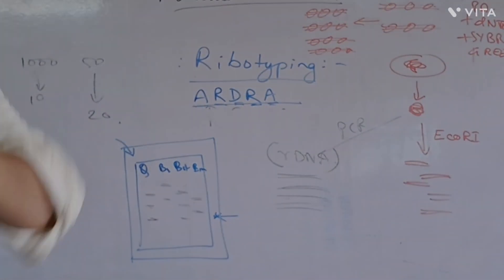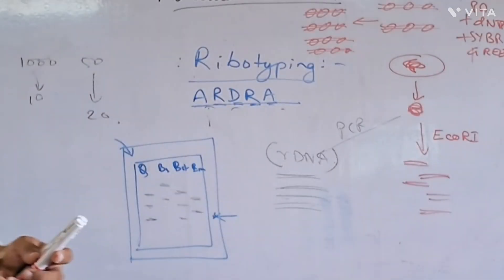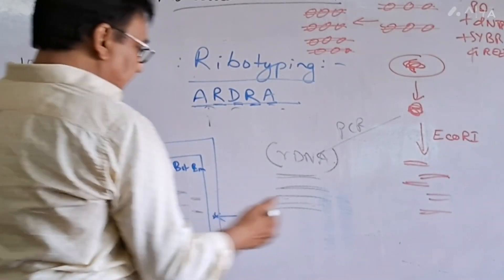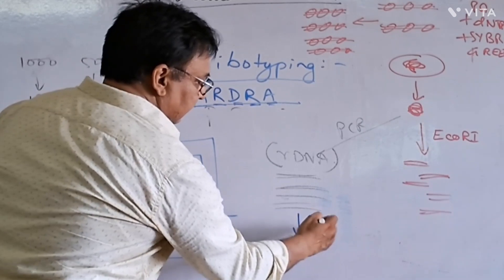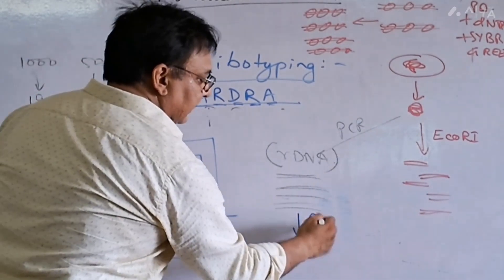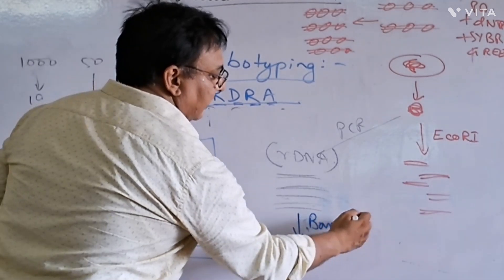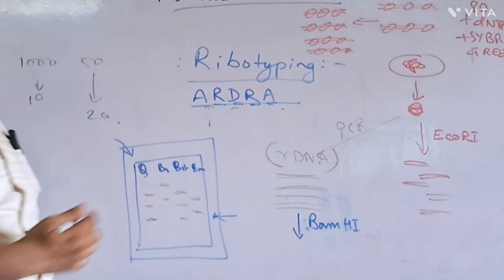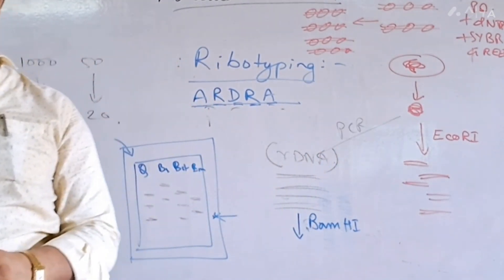rDNA has been amplified from the total genome, and then do a restriction digestion to this. Maybe you have used EcoRI, or you can use another—use BamHI, another restriction endonuclease. It has been cut.